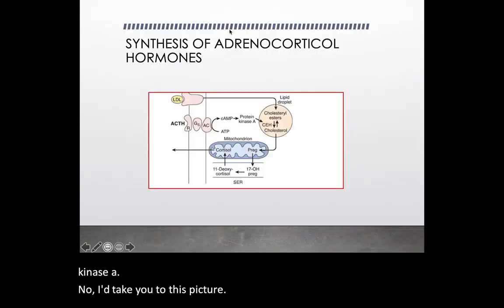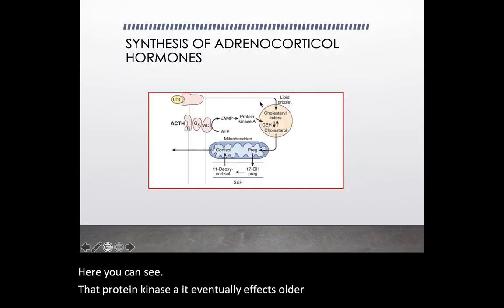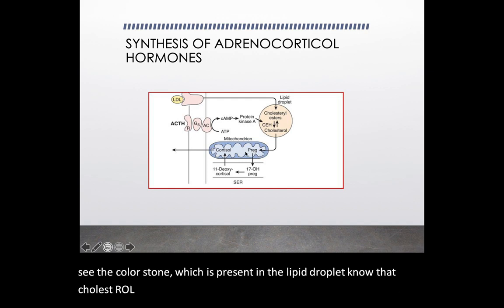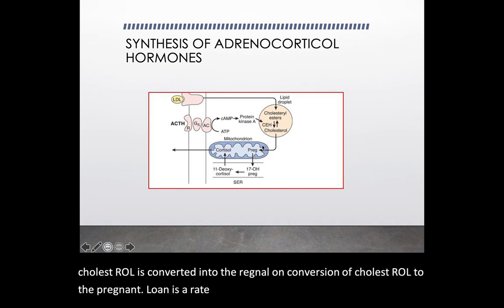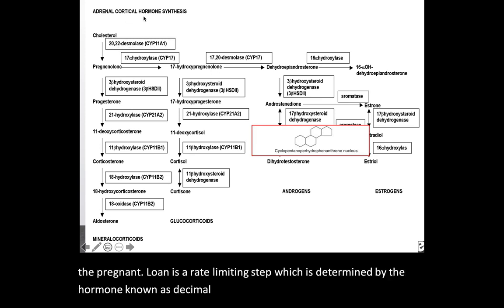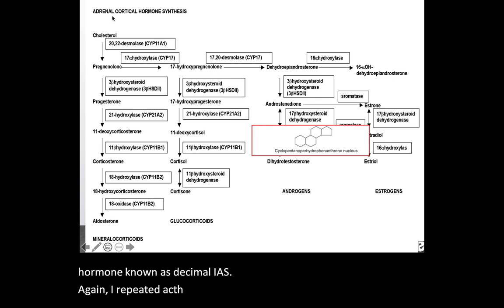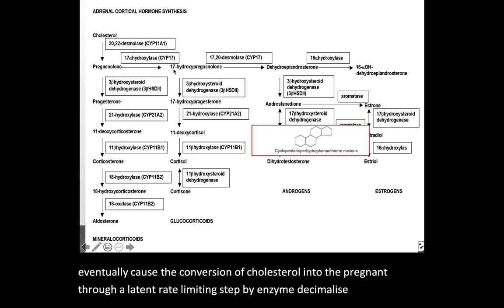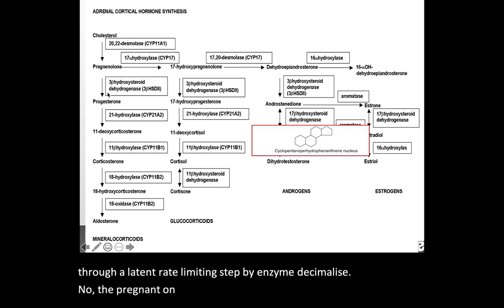Here you can see that protein kinase A acts on the cholesterol present in the lipid droplet. That cholesterol is converted into pregnenolone. The conversion of cholesterol to pregnenolone is the rate-limiting step, determined by the enzyme desmolase. So ACTH, through its receptor, causes the conversion of cholesterol into pregnenolone via the rate-limiting enzyme desmolase.